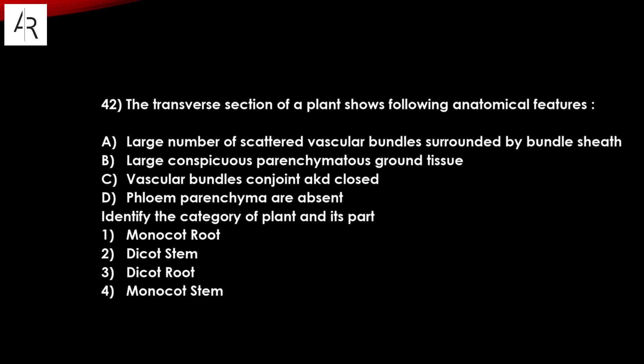Question number forty-two: a transverse section of a plant shows large numbers of scattered vascular bundles surrounded by bundle sheaths, large conspicuous parenchyma as ground tissue, and conjoint closed vascular bundles with phloem parenchyma absent. Identify the category of plant and its part — this is a monocot stem. Option number four is the answer.